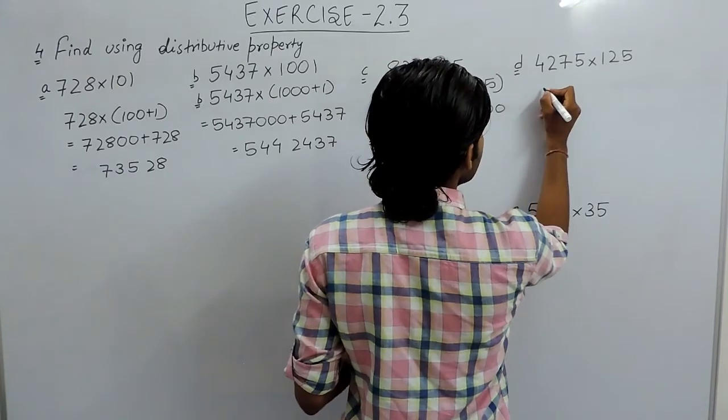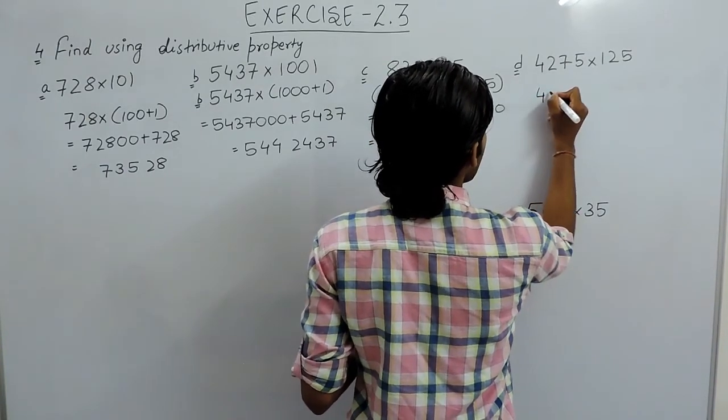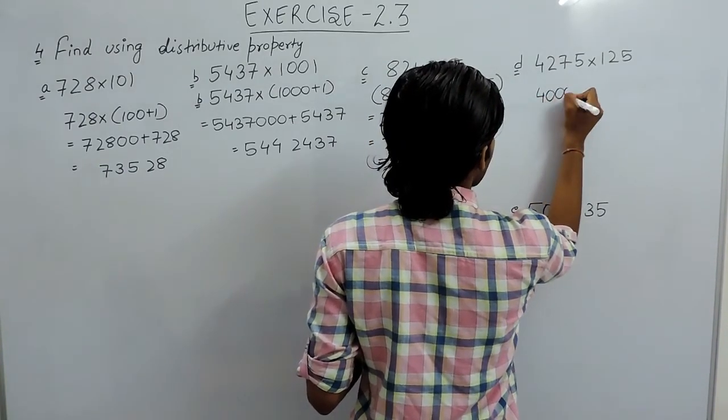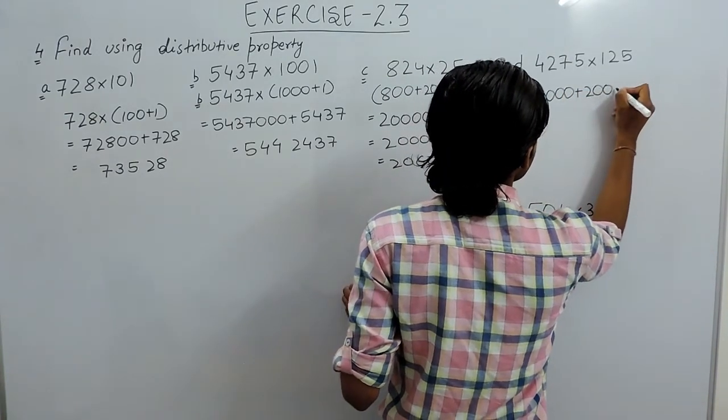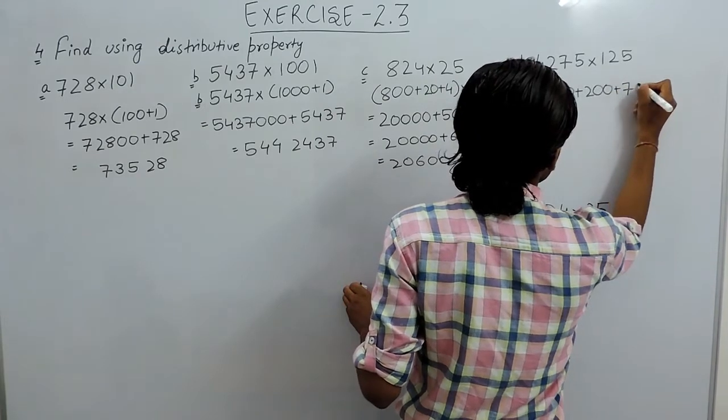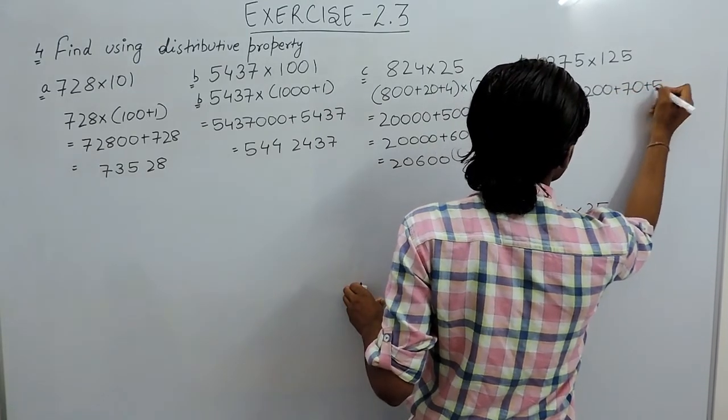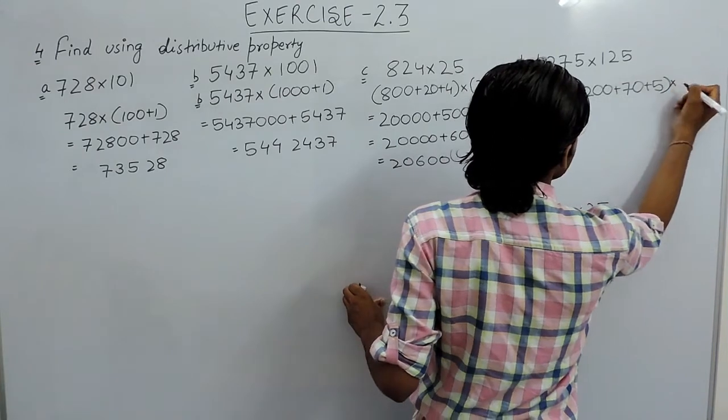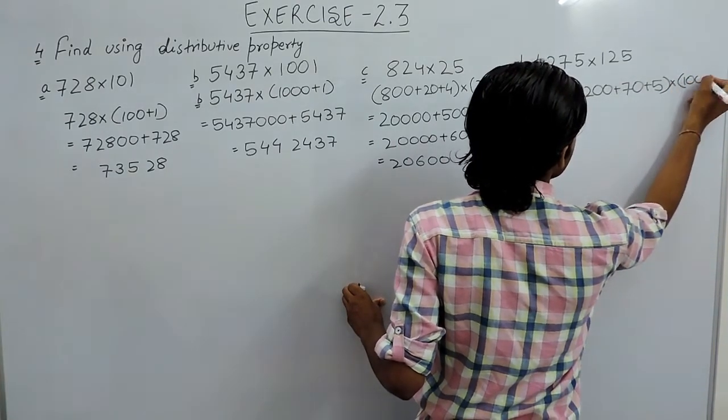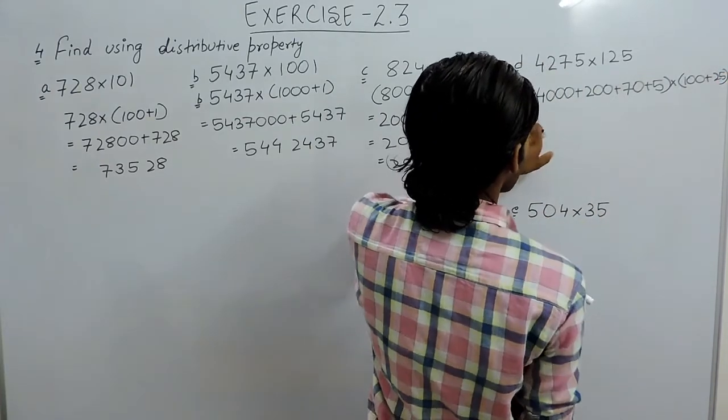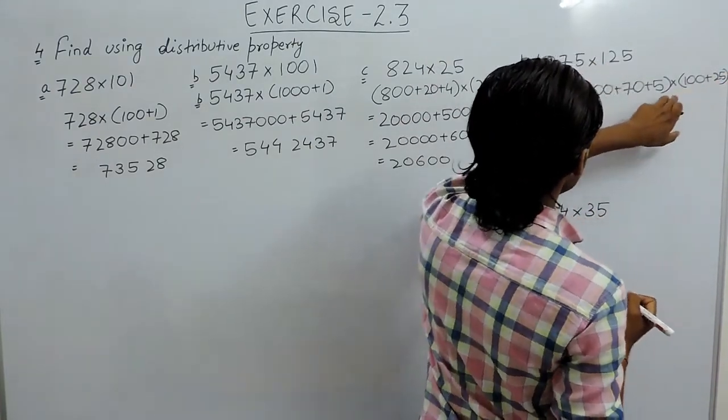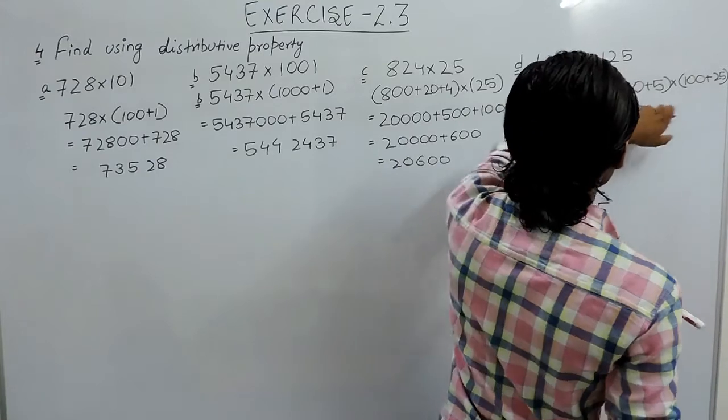In part D we can write this to be 4000 plus 200 plus 70 plus 5 multiplied with 100 plus 25. So first we will multiply this number with all of these and then this with all of them.